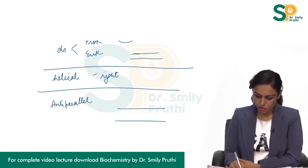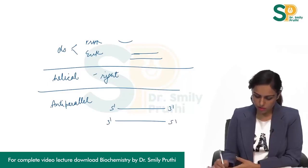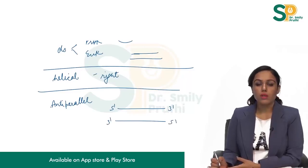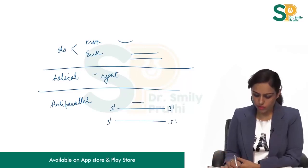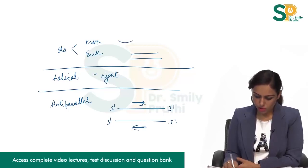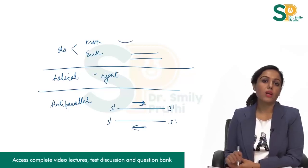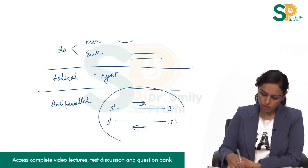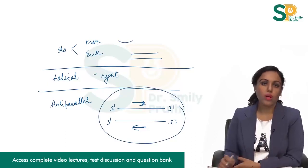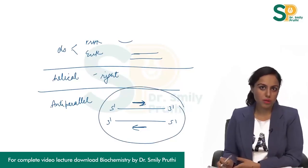What anti-parallel means: let's say these are two strands. One strand has 5' here and 3' here, and the other is 3' here and 5' here. Direction is always from 5' to 3'. So the upper strand is going towards the right side and the lower strand is going towards the left side. This entire arrangement in one word is known as anti-parallel.